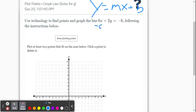We're going to subtract 6x from both sides, subtraction property of equality. So then we have 2y equals negative 6x minus 6. Now we want to get y by itself. We want 1y.